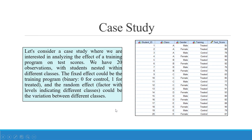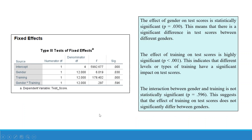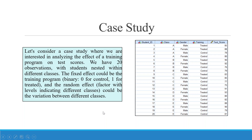Now let's see a case study to solve in SPSS. We are interested in analyzing the effect of a training program on test scores. We have 20 observations with students nested within different classes. The fixed effects is the training program — binary, zero for control and one for treated. The random effect is a factor with levels indicating classes A, B, and C. We also have one more variable, gender, and the outcome is the test score.